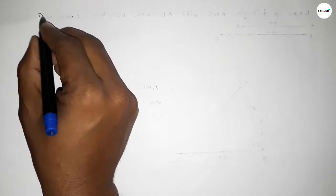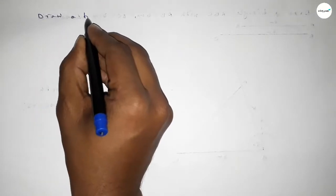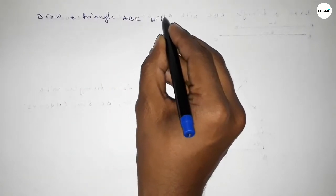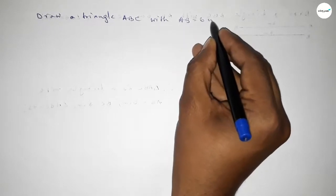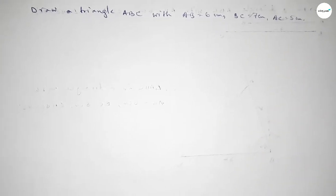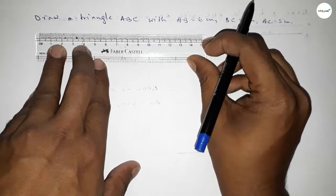Hi everyone, welcome to SI Share Classes. Today in this video we have to draw a triangle ABC with AB equal to 6 centimeter, BC equal to 7 centimeter, and AC equal to 5 centimeter. So let's start the video.